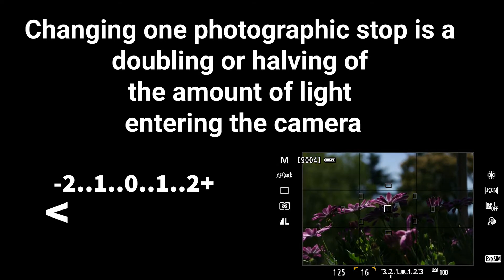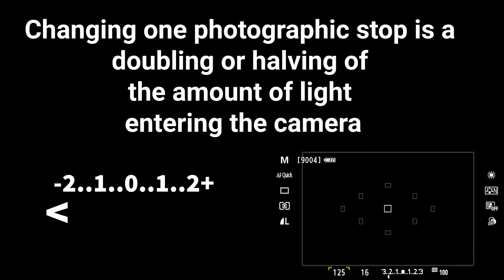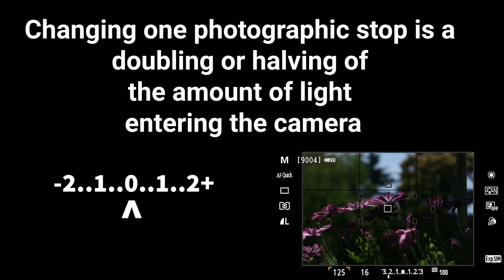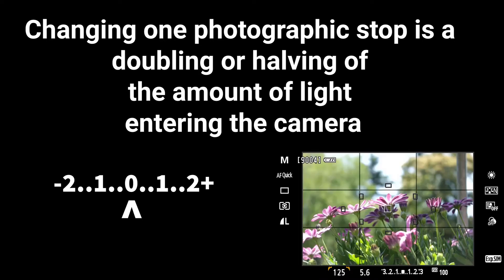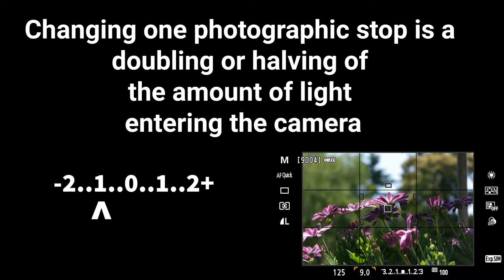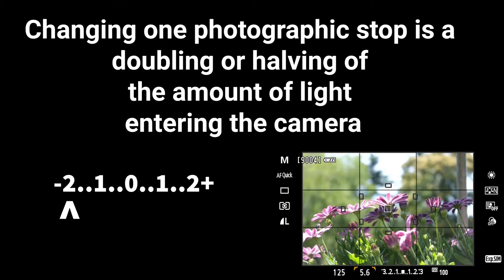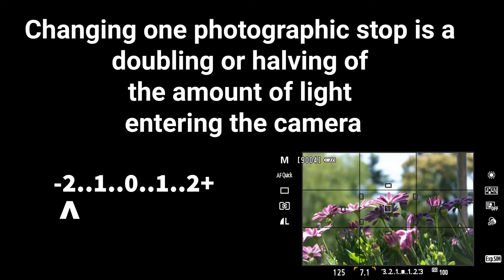On the left-hand side of the screen, I've also made a larger one, just to show you that it is a number line, and that number line represents photographic stops. A movement of one entire number on this line means that you have doubled or halved the amount of light getting into the camera. In this case, we've lost two stops, so we've cut the amount of light getting into the camera four times.